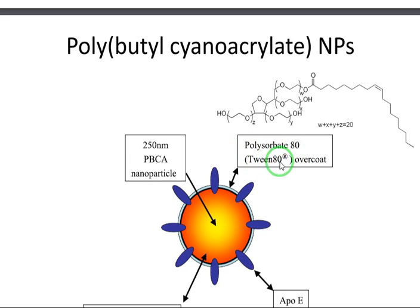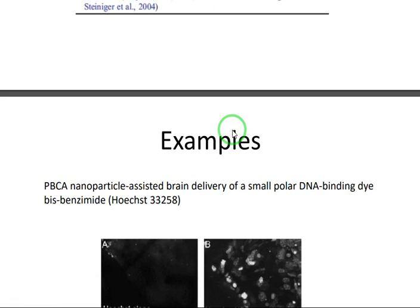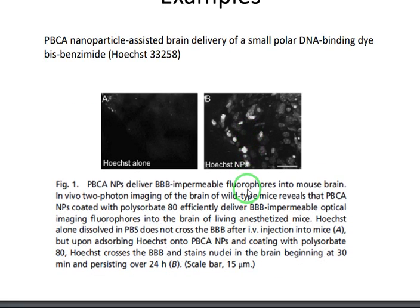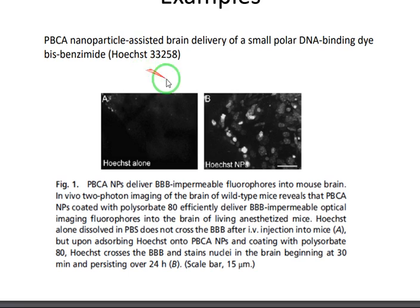Tween 80 surfactant is used to increase the colloidal stability of these nanoparticles. Now let's look at some examples using polybutyl cyanoacrylate (PBCA) nanoparticles to cross the blood-brain barrier and their applications.